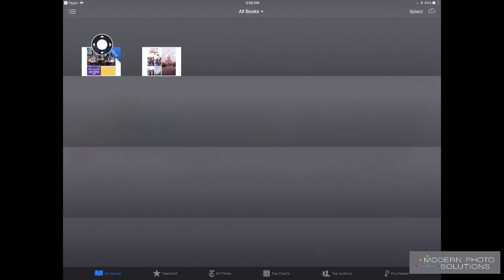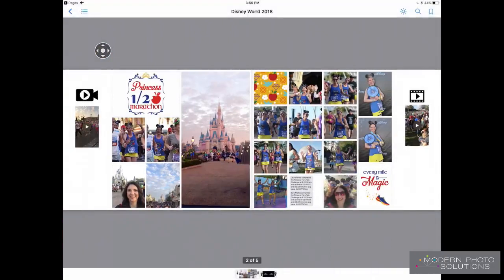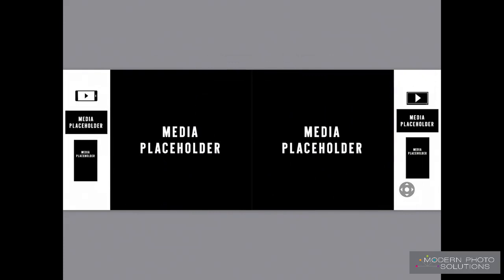Let's open it up once again just by tapping on it. There's our cover. And you can also see that if we come down here to the bottom right, we can swipe the pages to turn them. And that is how you can use Pages on an iPad to make an eBook — it's an EPUB eBook that can be used in any eReader that's compatible with EPUB files. And once again, I'm Steph from ModernPhotosolutions.com.